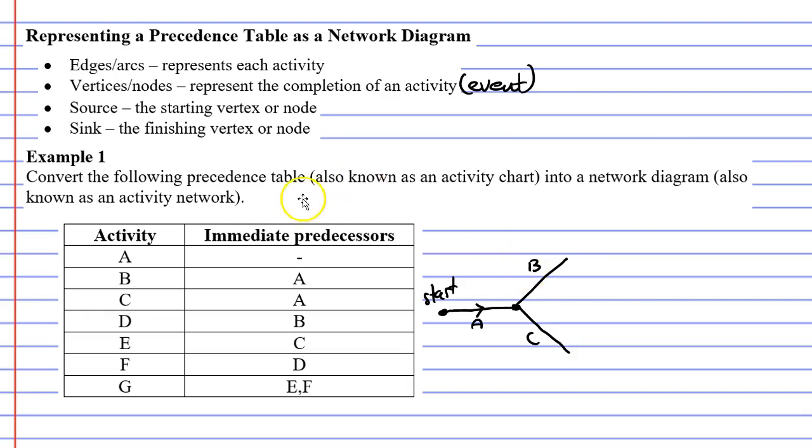So we have two edges representing activities B and C. We need to show the direction of these activities with an arrow as well.